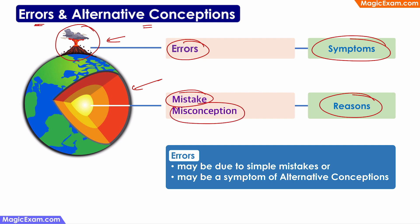If the person's fundamental knowledge is correct but there is a clerical error, calculation error, or simple confusion, then that is a mistake — these can be easily corrected by fixing the symptom. Whereas in case of a misconception, the person has an alternative conception in mind, so you must first identify that alternative conception and correct it. Only then will you be able to correct the errors; otherwise, the person will keep repeating the same errors again and again.